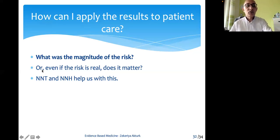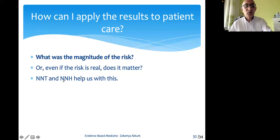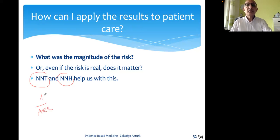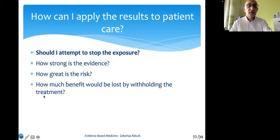Therefore, we may look at two terms which you already learned previously: the number needed to treat and the number needed to harm. What was the number needed to treat? The formula was one divided by the absolute risk reduction — just reminding you once more.